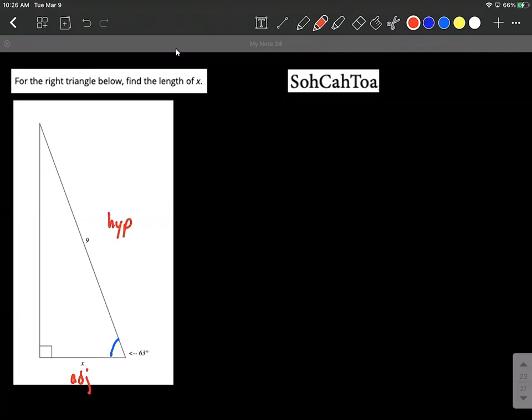What we want to do is pick out the right trigonometric ratio that's going to involve the adjacent side and the hypotenuse. SOHCAHTOA tells us that sine is opposite over hypotenuse, cosine is adjacent over hypotenuse, and tangent is opposite over adjacent, so we really want to focus on cosine.